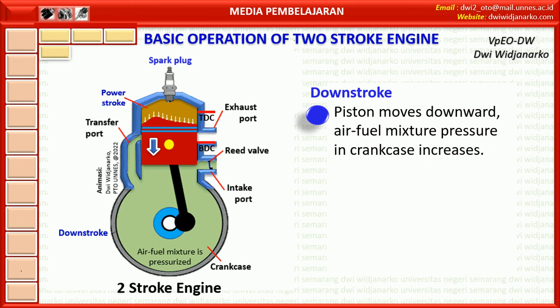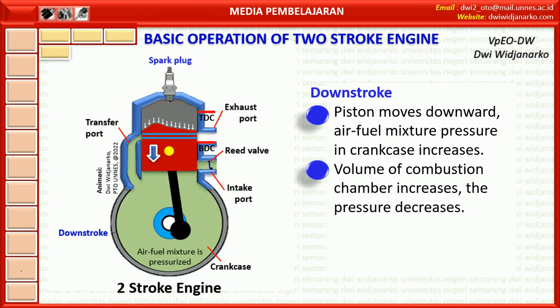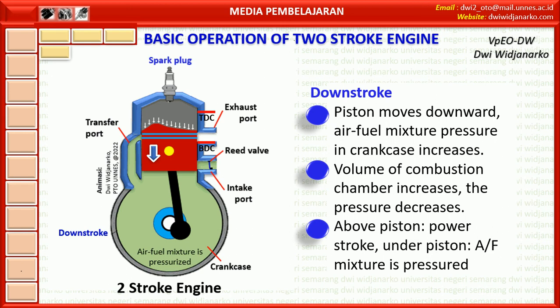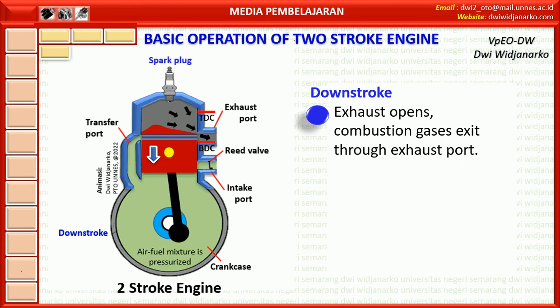As the piston continues to move downward, the pressure of the air-fuel mixture in the crank case increases, while the volume of the combustion chamber increases and its pressure decreases. The downward movement of the piston causes the top surface of the piston to approach the exhaust port. When the piston passes the exhaust port on the cylinder wall, the exhaust port opens and combustion gases exit through it.